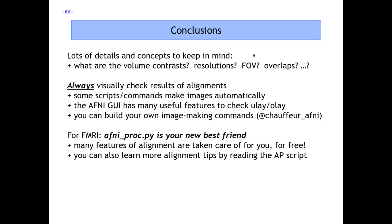In summary, whenever you're aligning to a template or between different subjects, nonlinear warping is the way to go. For template alignment, @SS_warper is particularly recommended; 3dQwarp is a more general case, and @Animal_Warper is for animal studies. Please always check results visually — you can use the images that come out of @SS_warper and @Animal_Warper, or make your own systematic images using @chauffeur_afni. In both cases, results can be plugged directly into afni_proc.py, and this modularization of analysis is useful and hopefully fairly efficient.